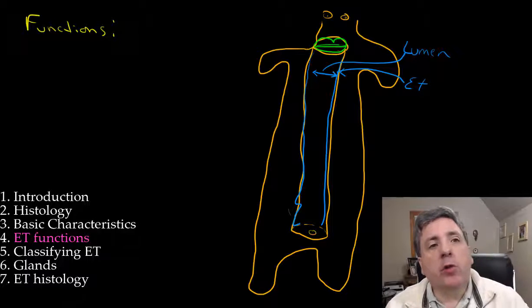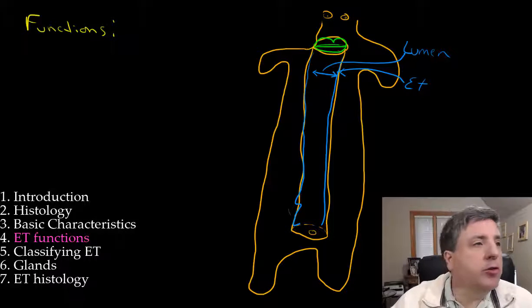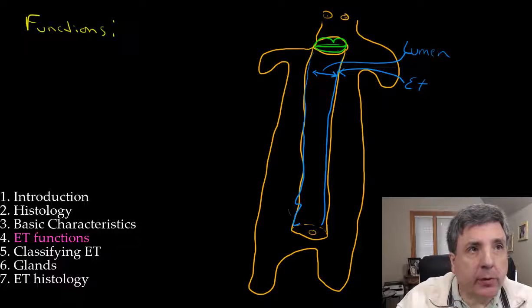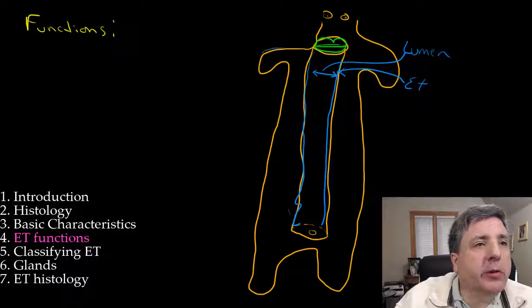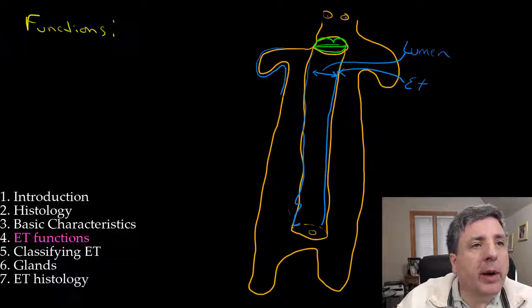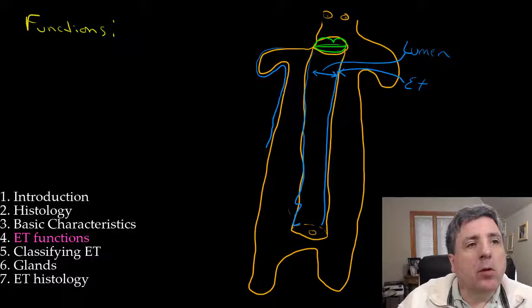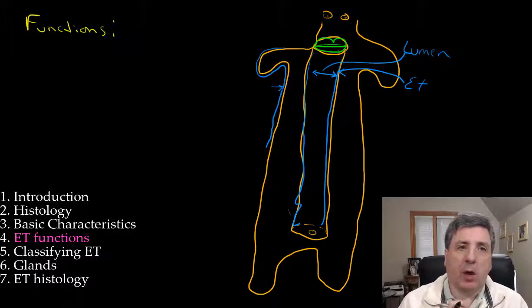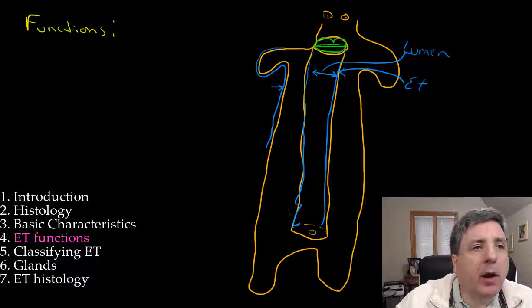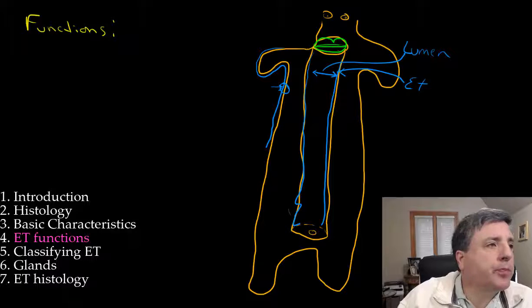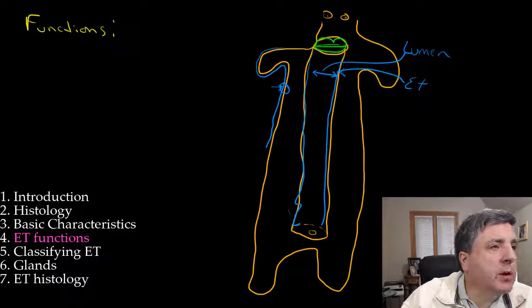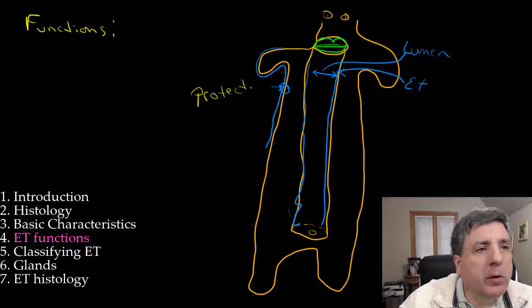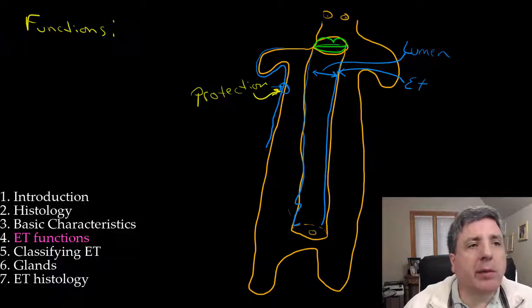We also know that epithelial tissue, I'm going to put all epithelial tissue as blue, although there are different types of tissues. We know that epithelial tissue lines our body. This is going to be our skin. And this epithelial tissue, the function is going to be protection.